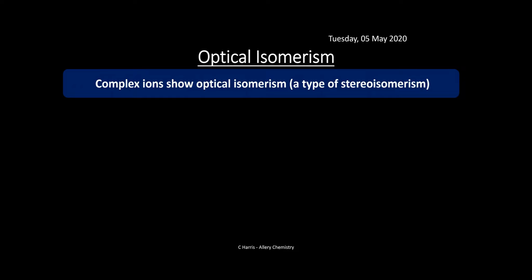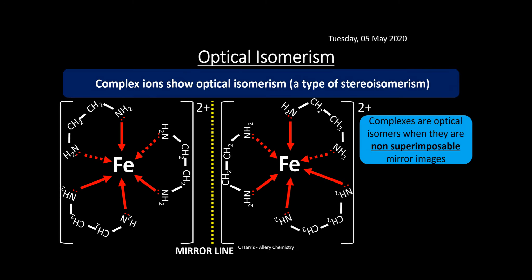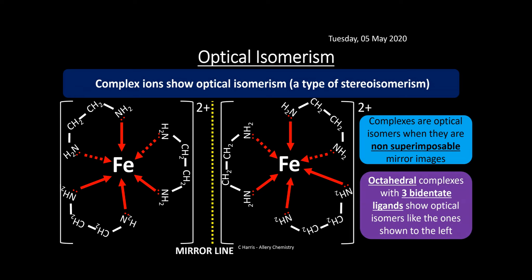Complex ions also show optical isomerism, a type of stereo isomerism. Complexes are optical isomers when they are non-superimposable mirror images - if you put a mirror line between them, you get the mirror image. Optically active complexes rotate plane-polarised light. Octahedral complexes with three bidentate ligands show optical isomers. This is not a massive area of the specification, but you need to be aware that they do form optical isomers.